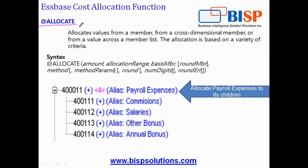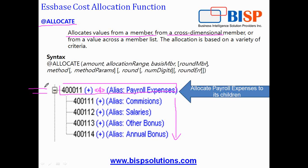According to the allocation rules or definition, you allocate values from a member or cross-dimension member. In our example, we are going to allocate payroll expenses to all the children. The down arrow represents the allocation where you input a value to the parent and it cascades down to all the children. So my payroll expense cascades down to commission, salaries, other bonus, and annual bonus. It could be a value or a cross-dimension — for example, payroll expenses with respect to budget payroll expenses.